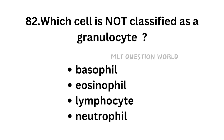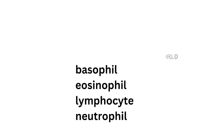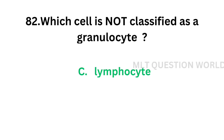Question number 82. Which cell is not classified as a granulocyte? Option A: Basophil. Option B: Eosinophil. Option C: Lymphocyte. Option D: Neutrophil. The correct answer is Option C — Lymphocyte. Lymphocyte is an agranulocyte.